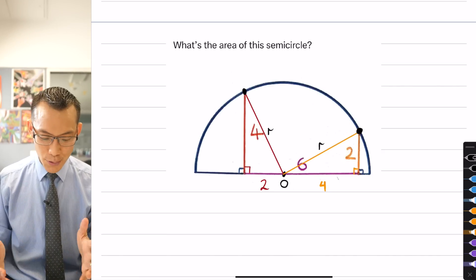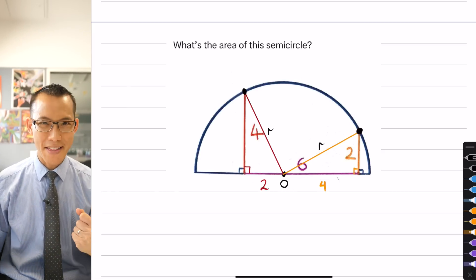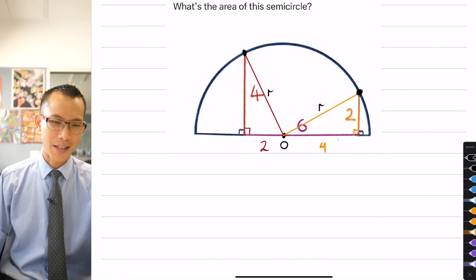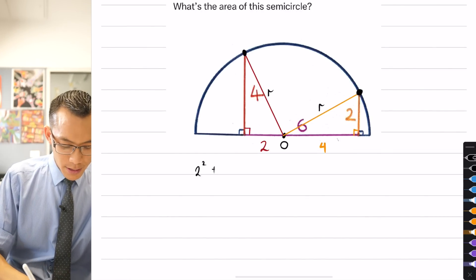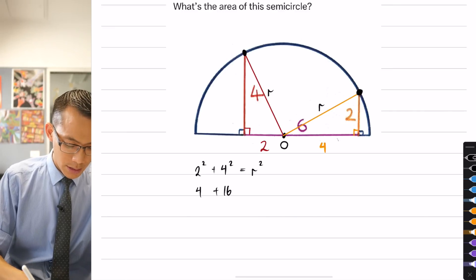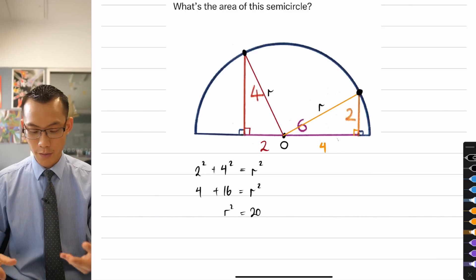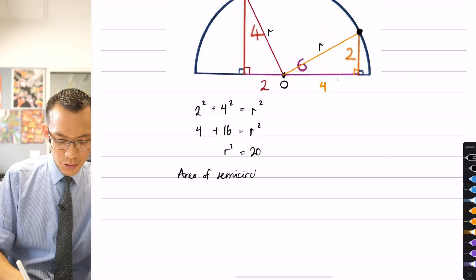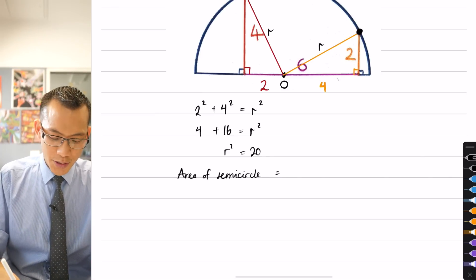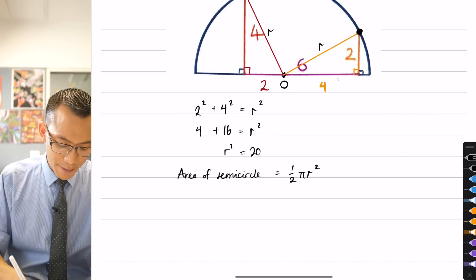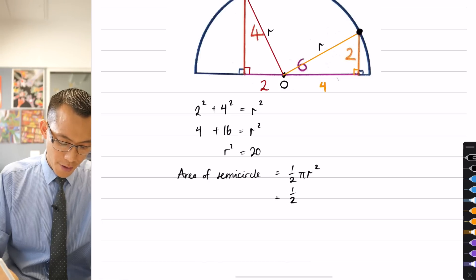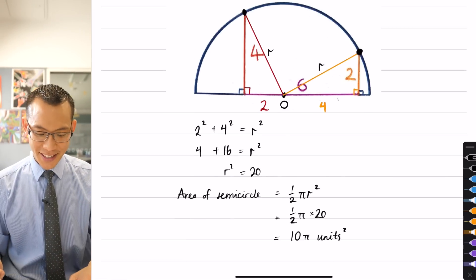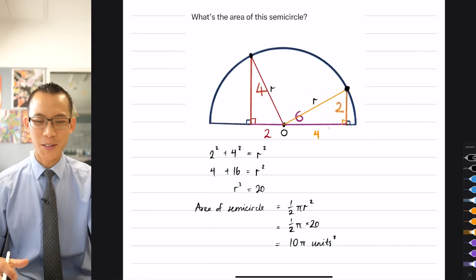So these hypotenuses are not just random — I can replace H with r. They are both radii. I can use Pythagoras's theorem: 2² + 4² = r², giving 4 + 16 = r², so r² = 20. I don't even need the square root because the area of a semicircle is ½πr², and r² = 20, so it's ½ × π × 20 = 10π square units. Very elegant — very little algebra required.